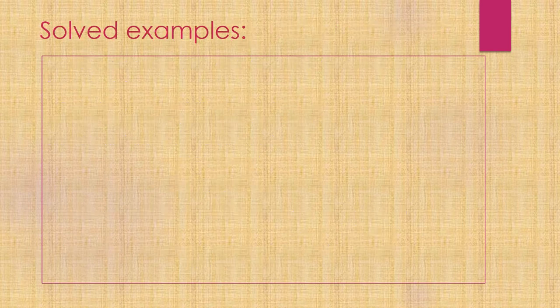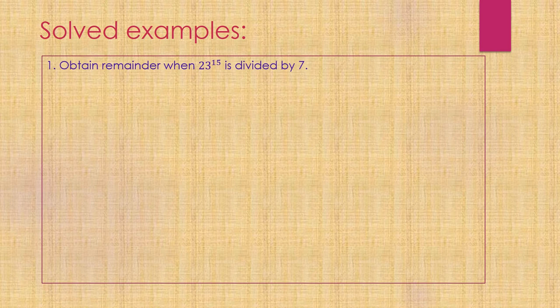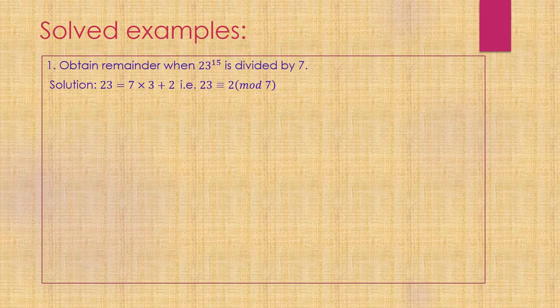Let me take you through a few examples so you can understand how to use these properties. Solved examples. Obtain the remainder when 23^15 is divided by 7. We can write 23 as 7 times 3 plus 2, so 23 is congruent to 2 modulo 7. Therefore, 23^15 is congruent to 2^15 modulo 7, using the property a^k is congruent to b^k modulo n.